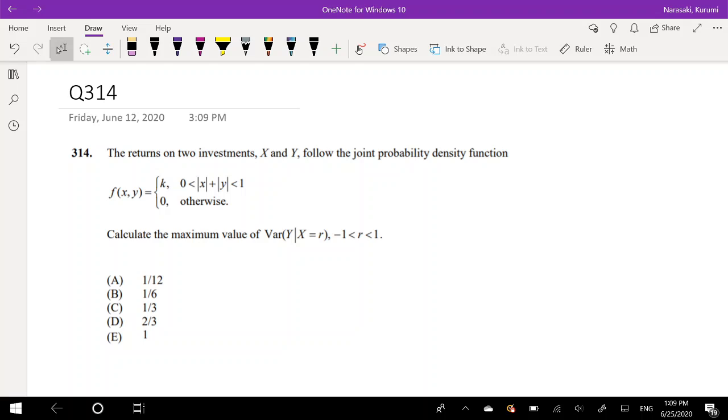Okay, so the first thing I notice is that the function, the probability density function, is a constant, which means it's a uniform distribution over this range right here. And then what is that range, you may ask? Well, we can just graph it real quick. I'm going to rewrite this as the absolute value of y is less than or equal to 1 minus the absolute value of x.